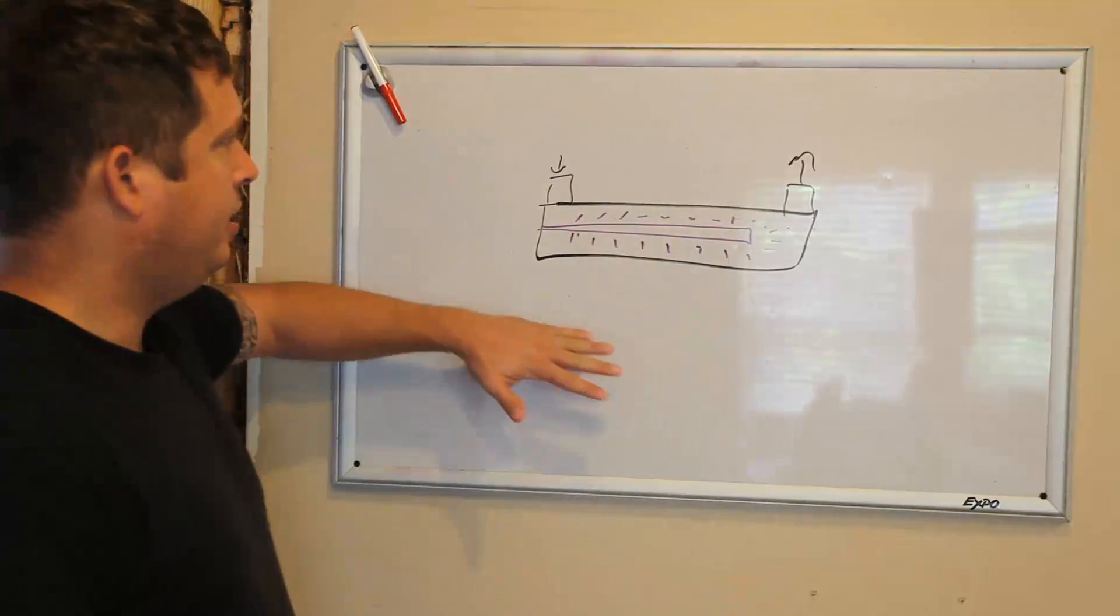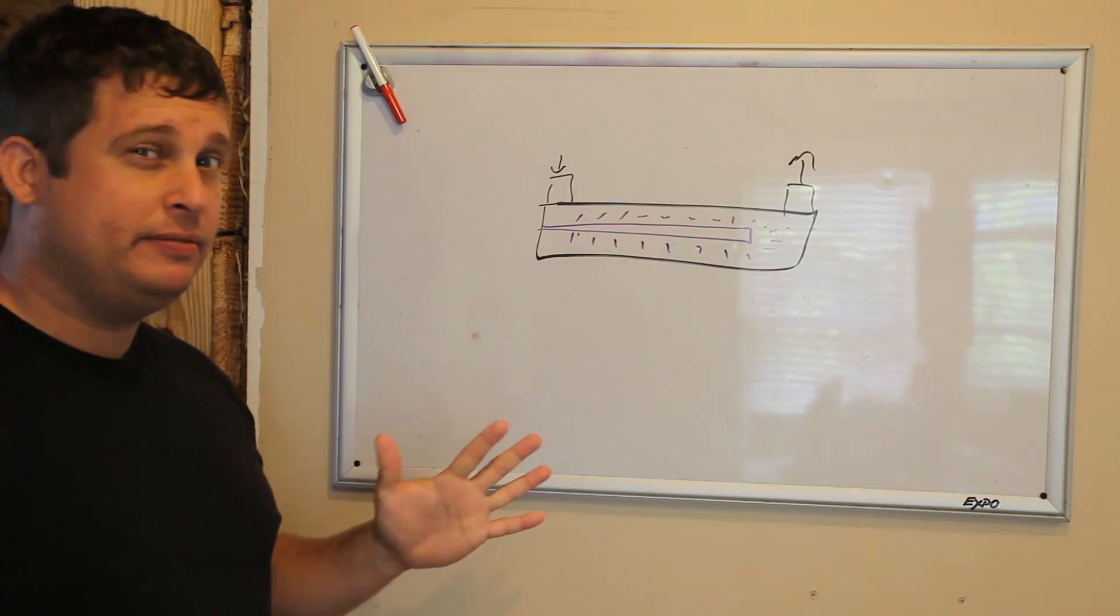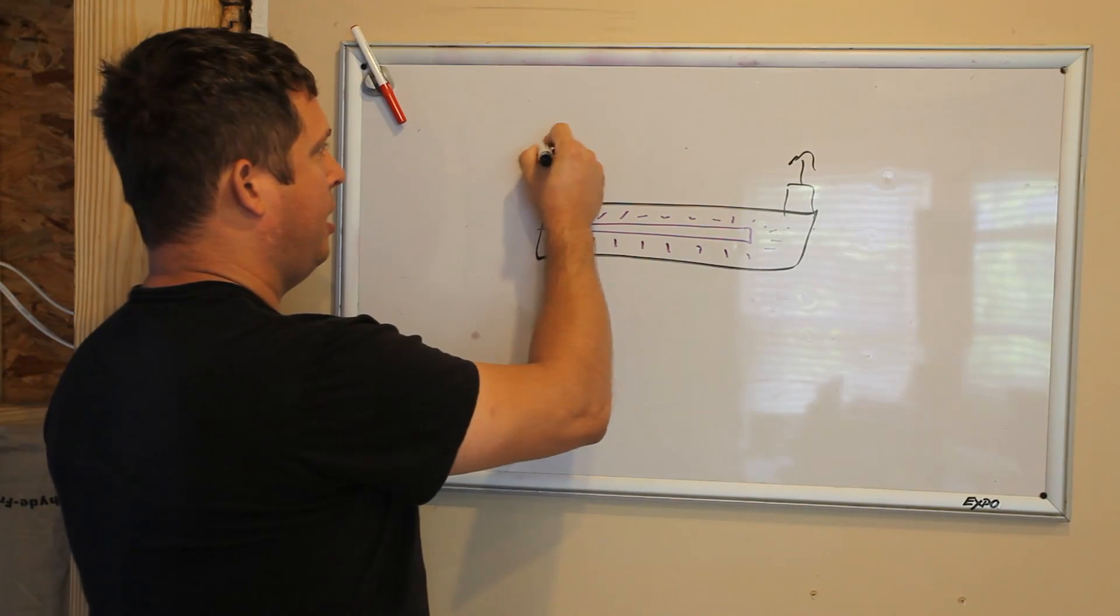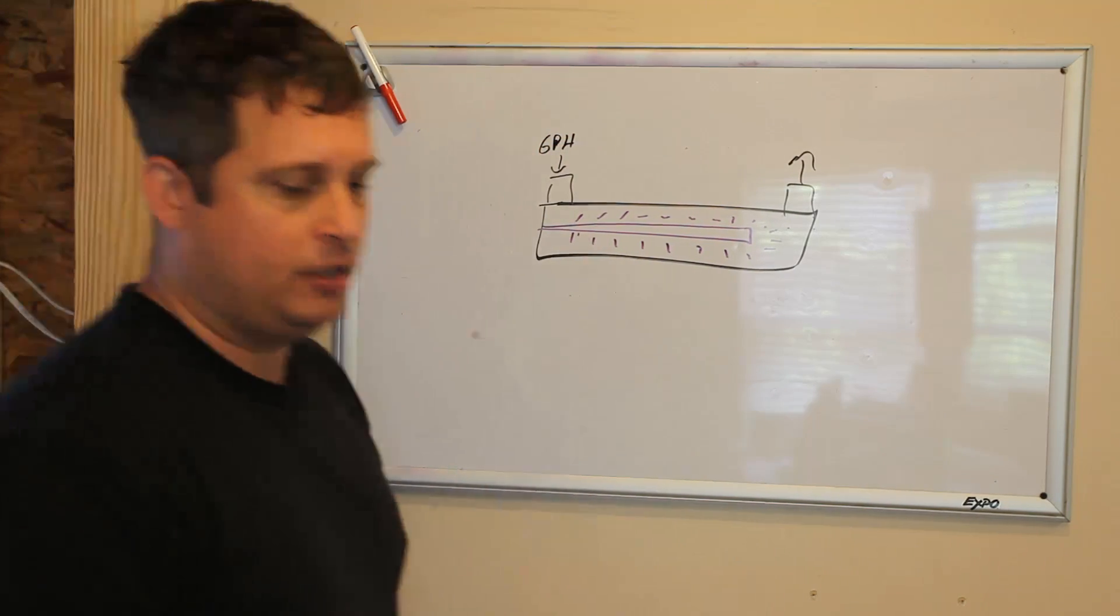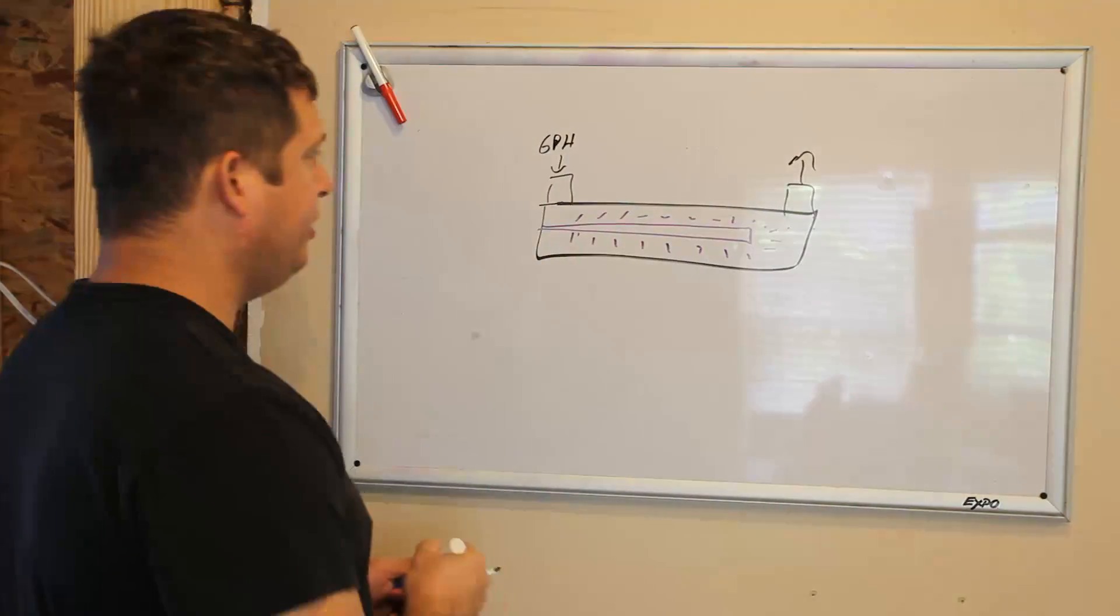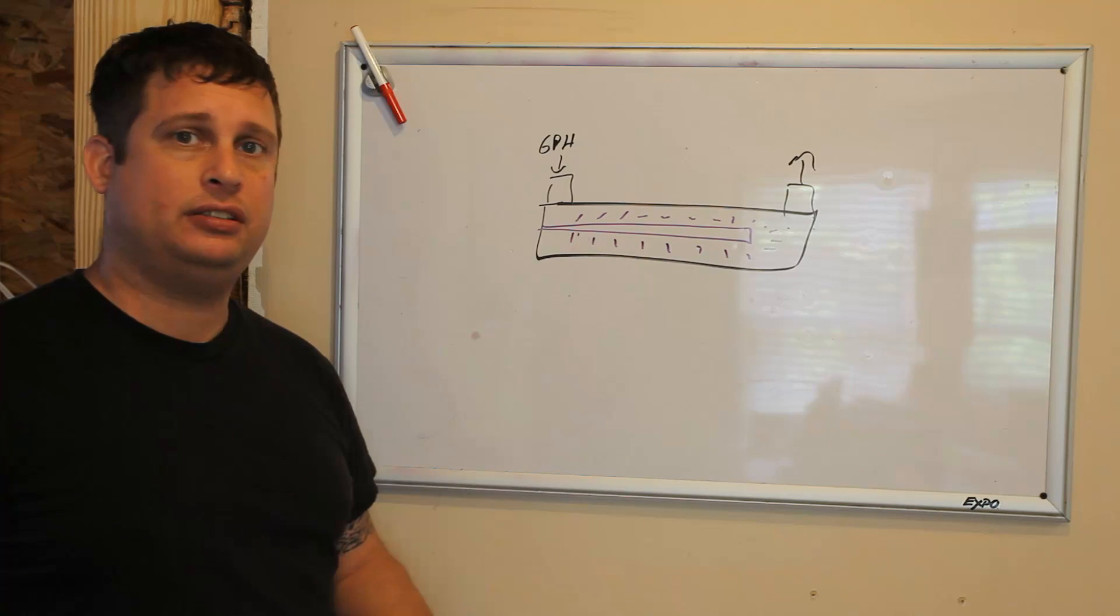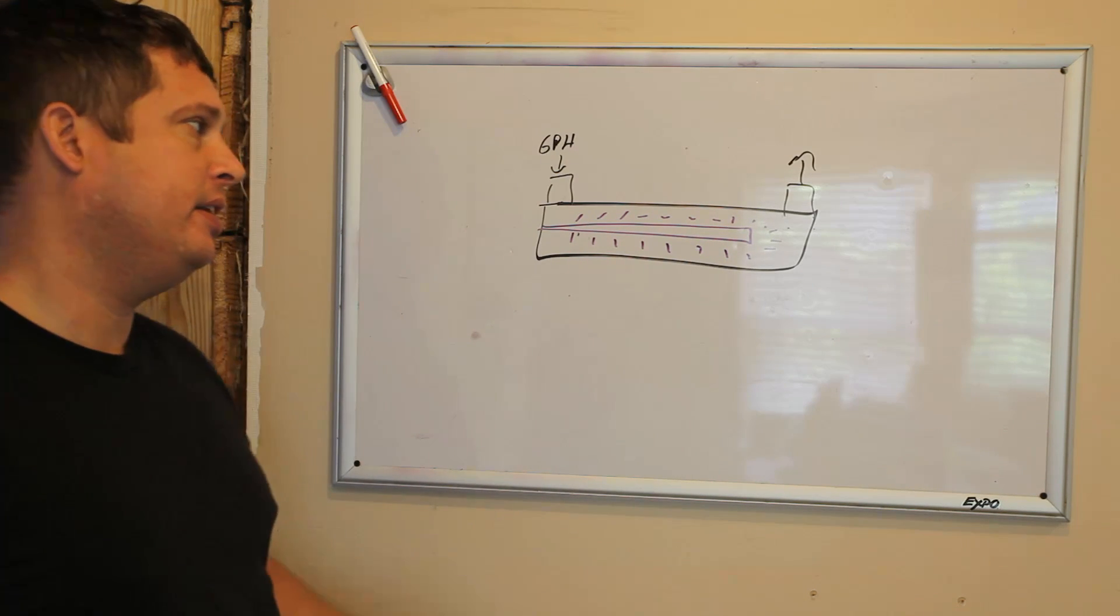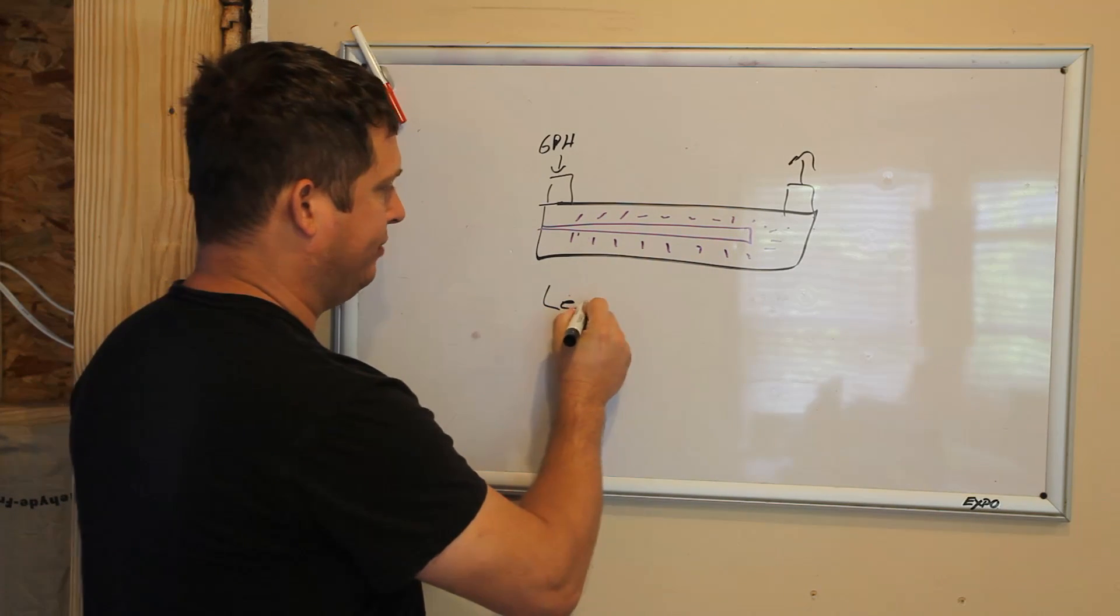There are probably three critical factors in this. One is how many gallons per hour do I need to run through my system? Another is what dosage of light do I need to kill whatever it is that I want to kill.